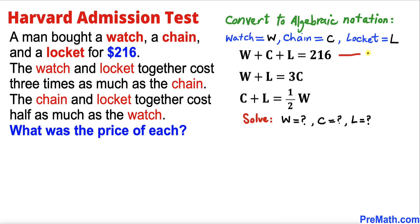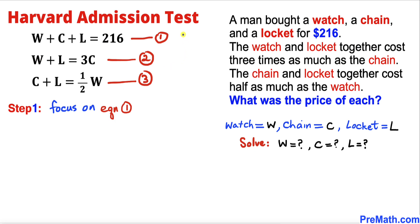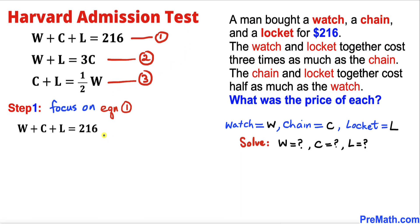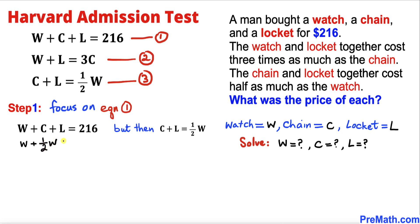Let's call the first equation equation 1, the second equation 2, and the third equation 3. Focusing on equation 1, we know from equation 3 that C + L = W/2. So I'm going to replace C + L in equation 1 with W/2.